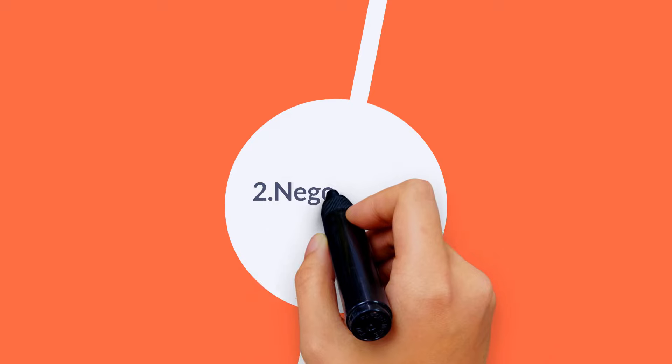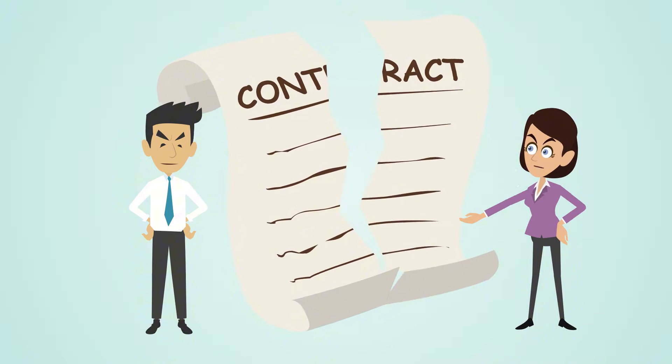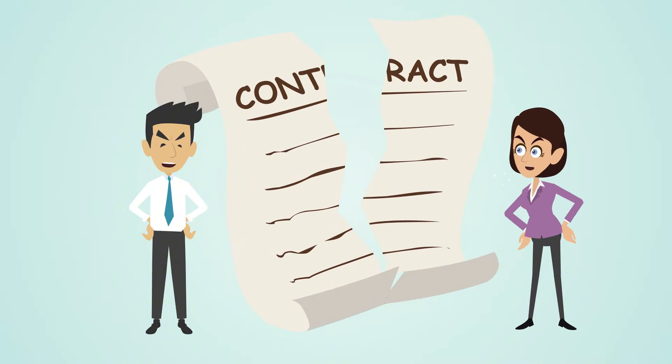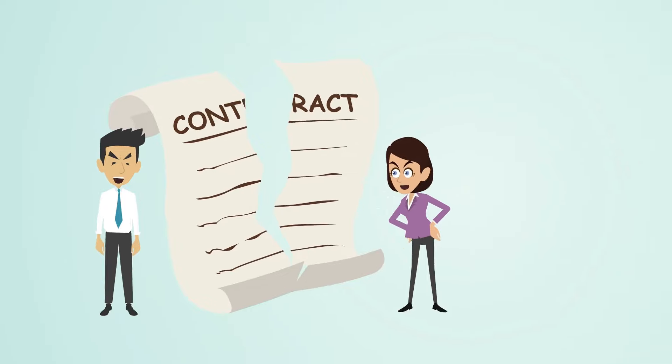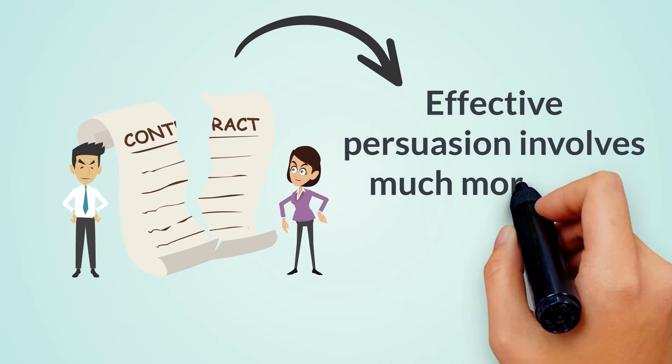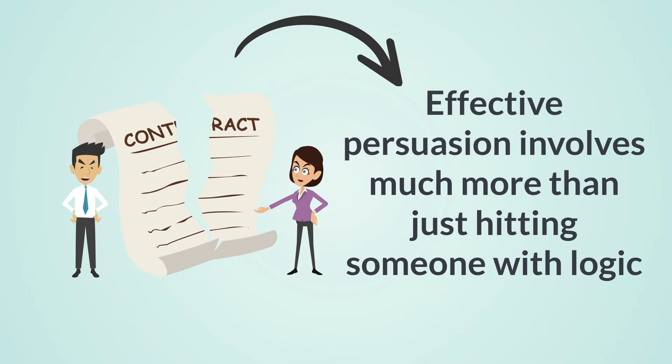Second, negotiation strategy. How do you convince someone that you're right? Adam Grant used to think that persuasion was all about overwhelming the other person with evidence to prove them wrong. But he's learned that effective persuasion involves much more than just hitting someone with logic. Here are some key strategies that great negotiators use.